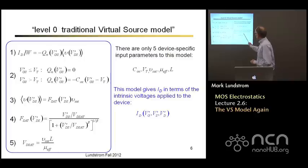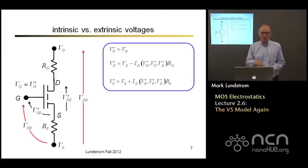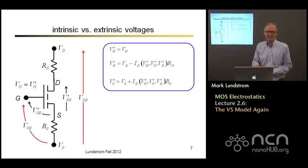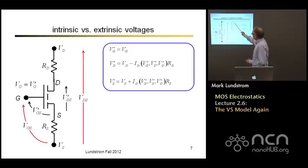So this model gives the drain current in terms of the voltages that we apply to the intrinsic terminals of the device. But you'll recall that we apply voltages to the actual contacts. And between the contacts and the silicon, and between the silicon source and drain and the actual channel itself, there can be some series resistances. So we'll have a drain and a source resistance. There'll be one in the gate too, but I'm not showing it because under DC conditions there's no voltage drop there, so there's no effect there.